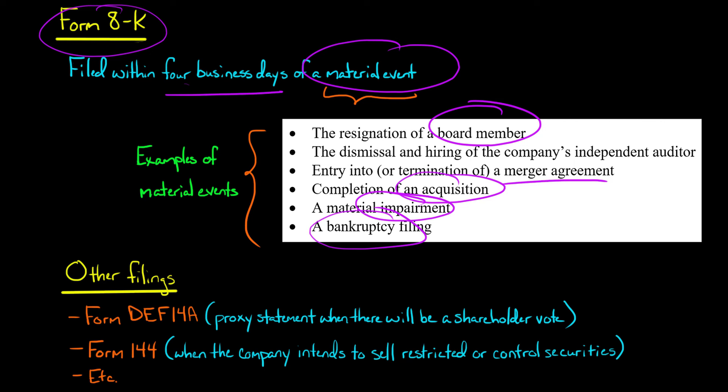Now there are a number of other filings that a public company might be required to make. I'm not going to give you a list of every single one, but just to give you an example, if you see this form right here, it's a proxy statement. So when the company is having their annual meeting and there's going to be a vote, for example for the board of directors, there's a proxy statement the company needs to file whenever there's going to be something that's going up for a shareholder vote.